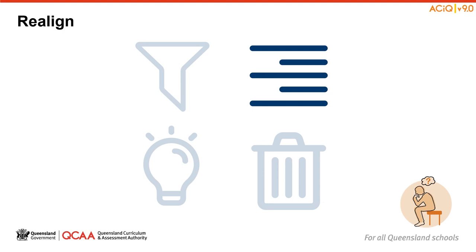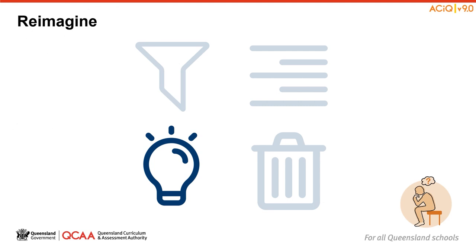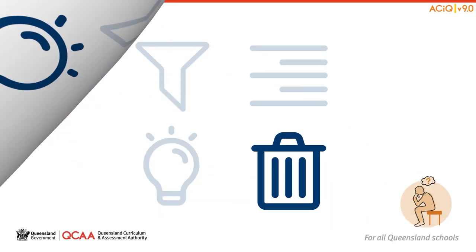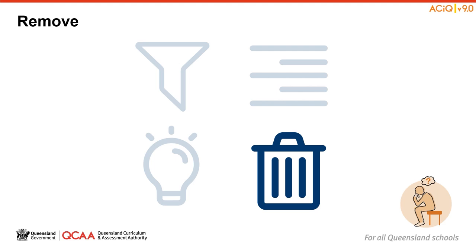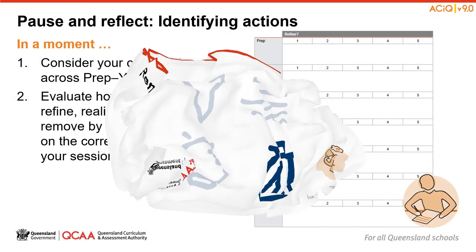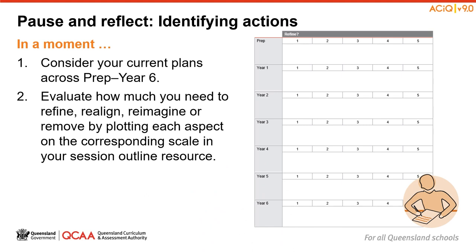Alternatively, in other contexts, and perhaps in certain year levels only, you may need to consider realigning your activities and assessment based on changes to the Content Descriptions and Achievement Standards for Mathematics Version 9. Perhaps there are certain year levels where you want to reimagine some units — it may be an opportunity to redesign some teaching and learning activities or assessment tasks. Has the Version 9 Curriculum prompted some new thinking for you? Finally, in your context, will some aspects need to be removed in order to meet the requirements of Mathematics Version 9? Consider your current plans across Prep to Year 6 in the context of these changes.